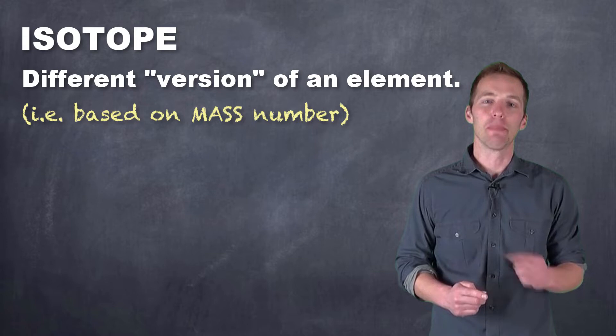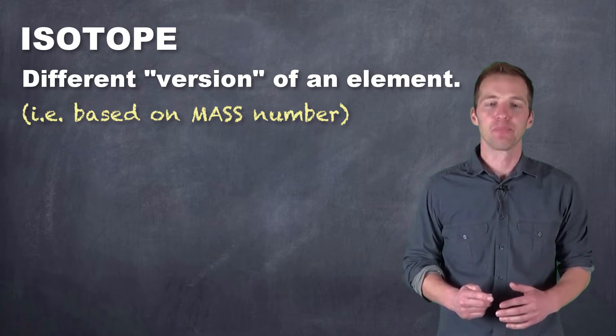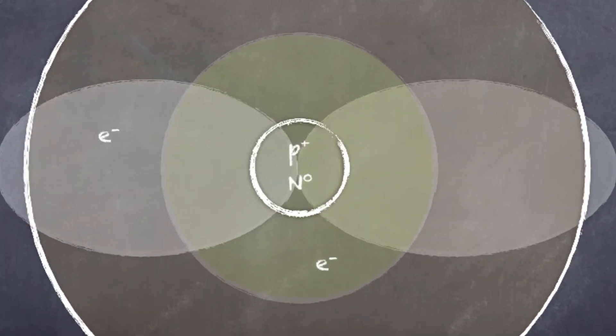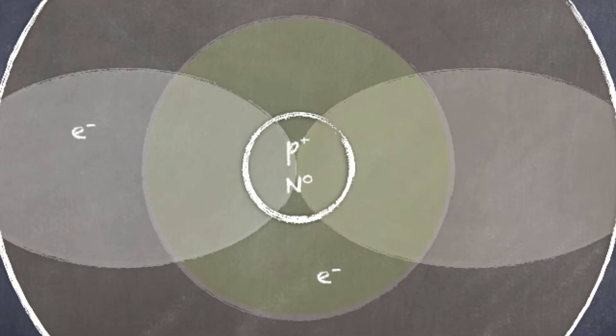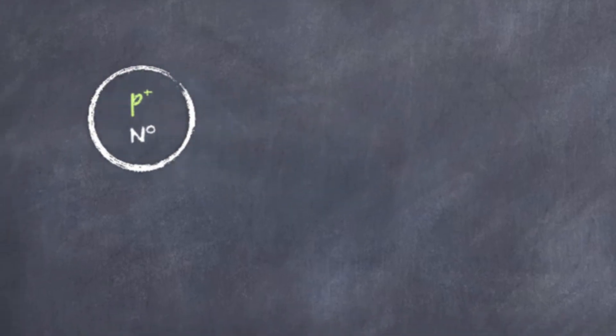Now, in order to understand mass number, we have to take a look back at the structure of an atom. So, within the nucleus, we know that there are protons and neutrons, and the atomic number equates to the number of protons that we have. In fact, the atomic number defines the element that we're using.